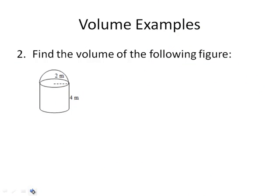Next example, this one is a cylinder with half a sphere on top. If you want, you can pause the video, try it on your own, and check if it worked out for you. Volume of the cylinder with radius 2 and height 4, plus volume of the sphere with radius 2, but it's half the sphere.